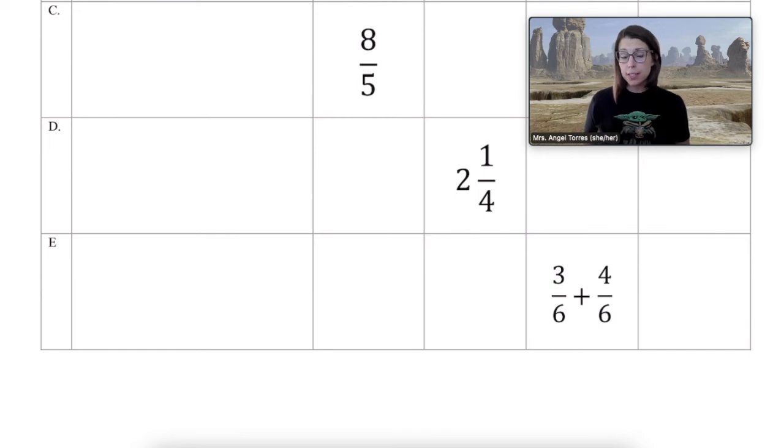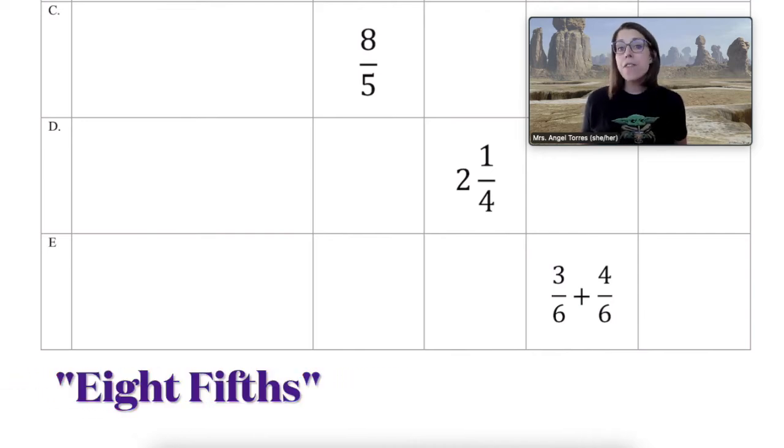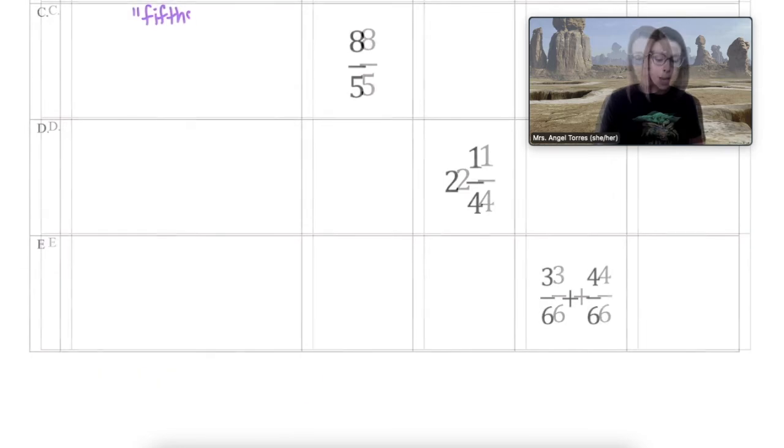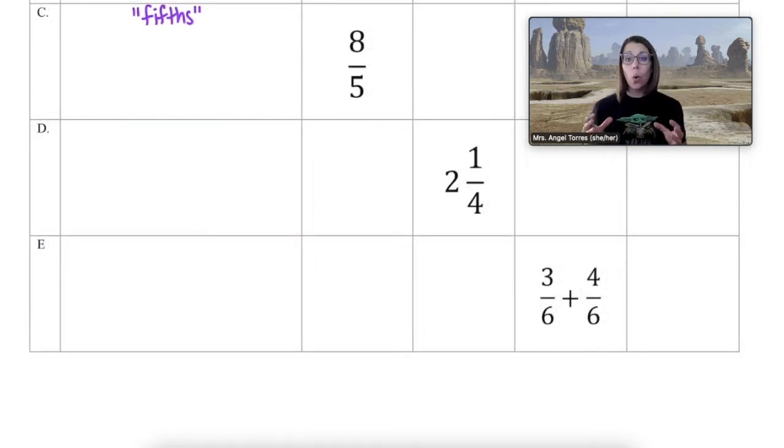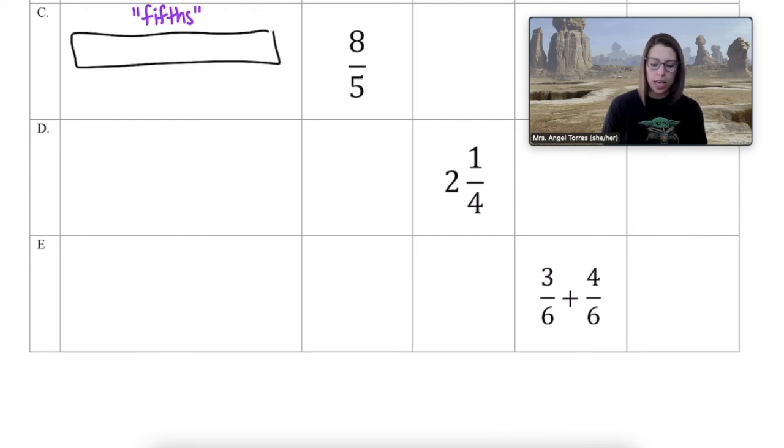Now before I draw a diagram, I have to make sure I understand what number I'm looking at here. The name of this fraction is 8 fifths. And fifths is the key word there, meaning each hole has to be broken up into five pieces.